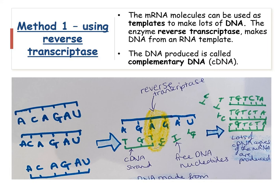The mRNA molecules can be used as templates to make lots of DNA. The enzyme reverse transcriptase makes DNA from an RNA template, and the DNA produced is called complementary DNA or cDNA. In this picture, in blue you've got the mRNA, then you've got free DNA nucleotides, and reverse transcriptase helps to join those free DNA nucleotides, which line up against the template mRNA by complementary base pairing, to form a complementary DNA copy strand — called cDNA.